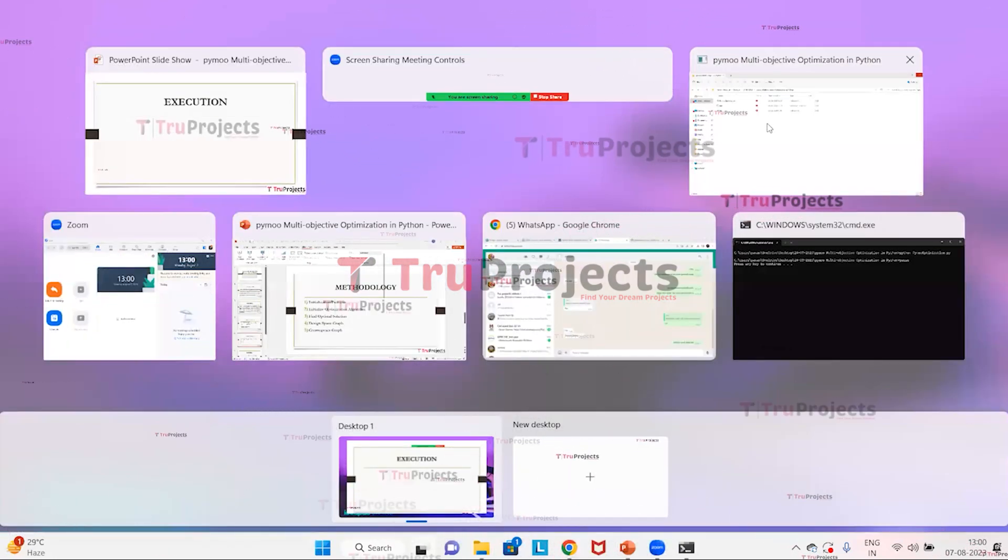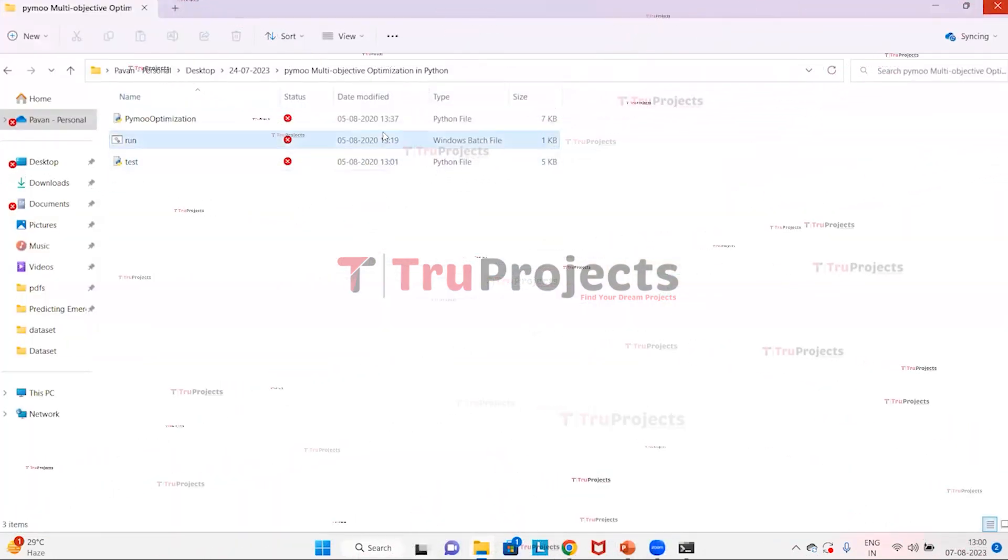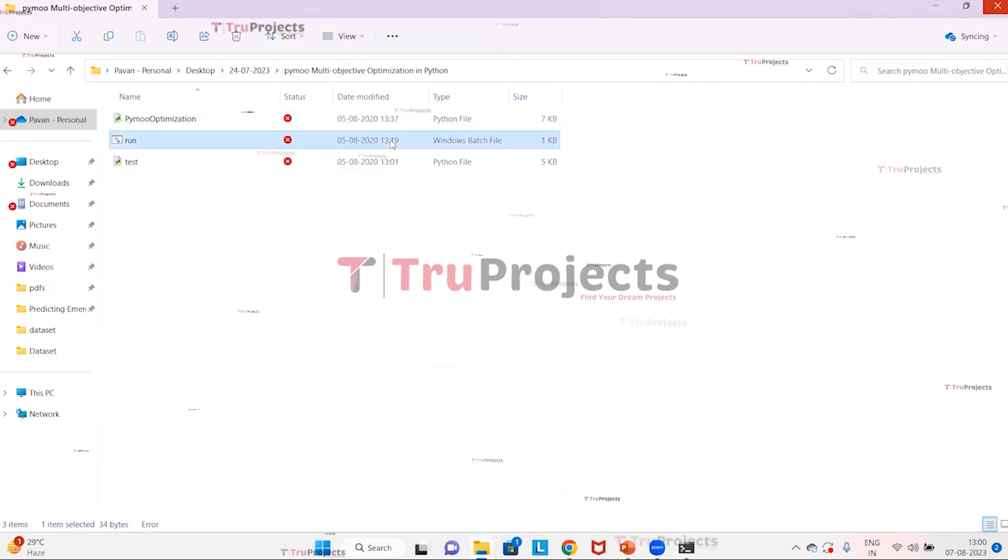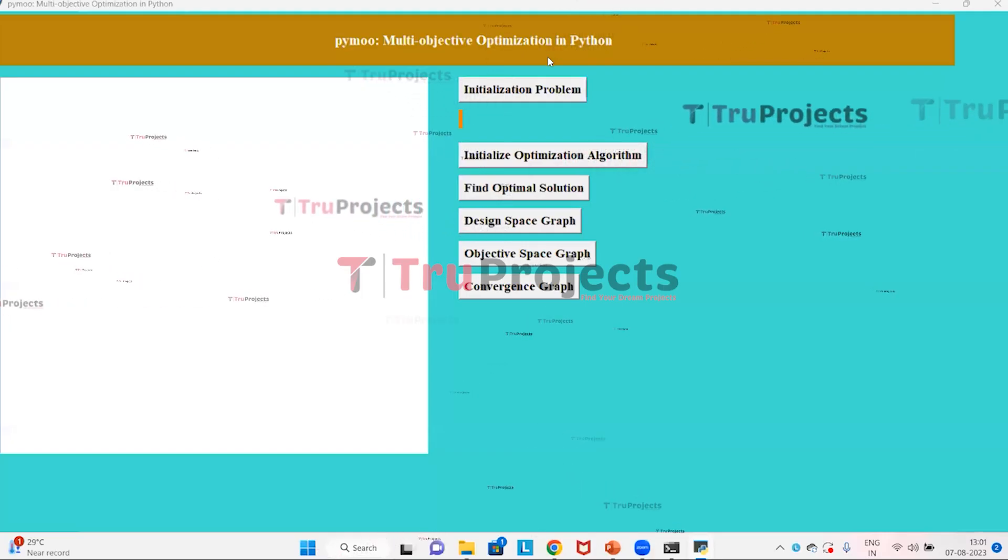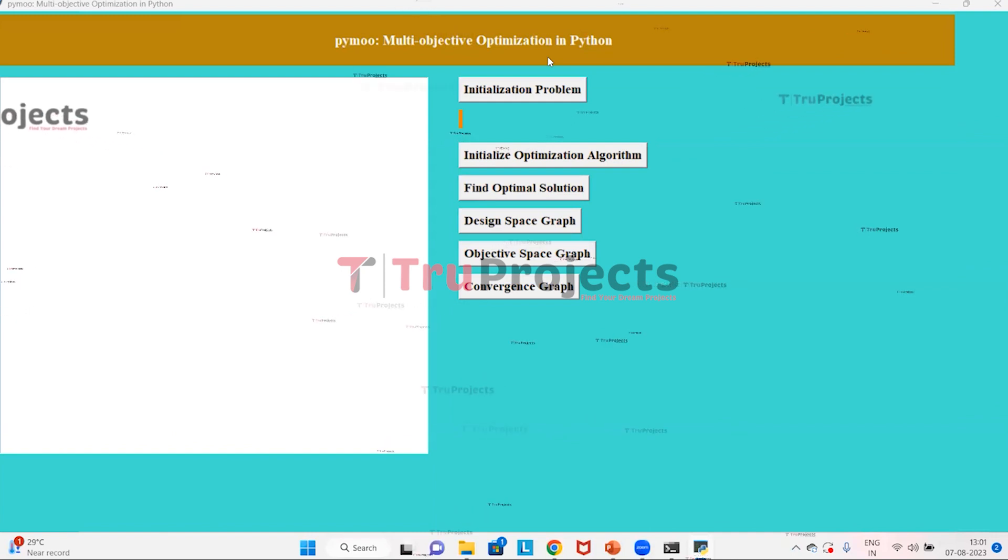For execution of the project, first open the code folder. This is the code folder of the project with the main code file and the run.bat file. Instead of executing the project in command line interface, we have created a Windows batch file for execution, so double-click on it for execution.